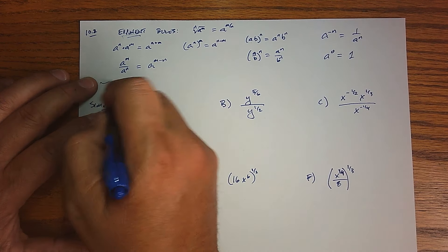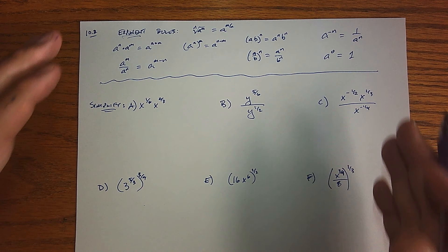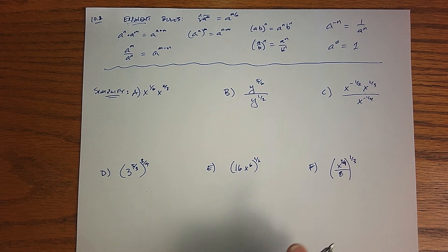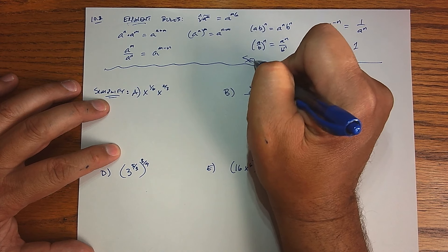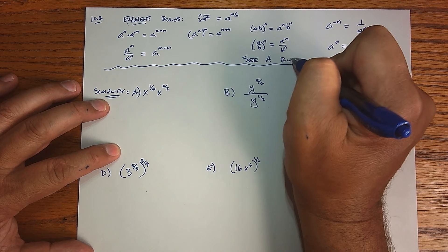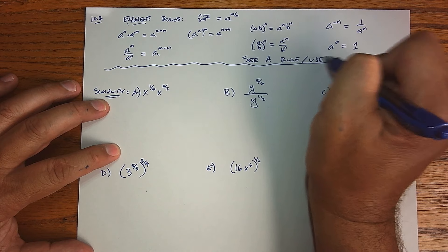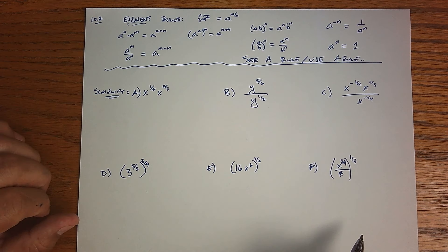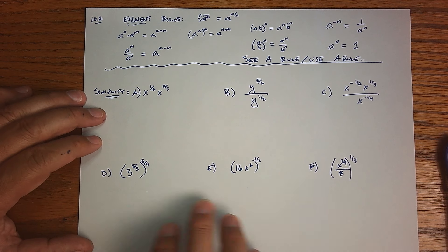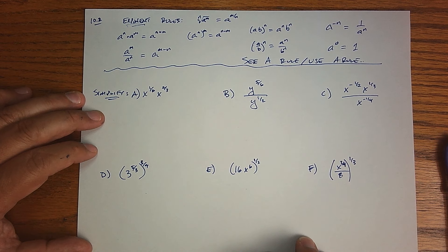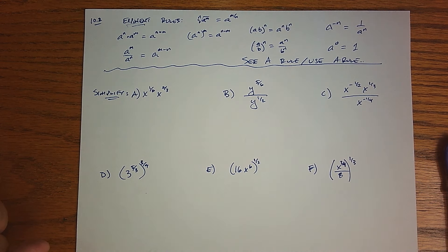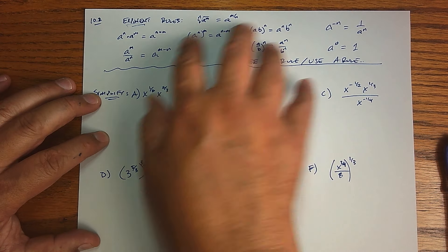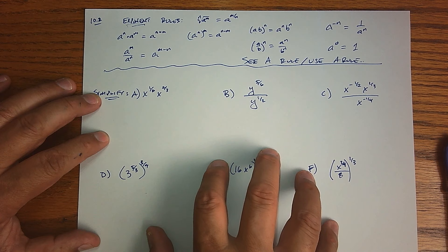So all these rules still apply, even if we have fractional exponents. So we get another opportunity to see a rule and use a rule. So let's go ahead and do that, all right? And what I'm going to do is I know there's six examples, and I know this video is going to get a little lengthy, so I'm going to stop there and cut away to another video where we will actually use these rules now that we reminded ourselves of them in these situations.